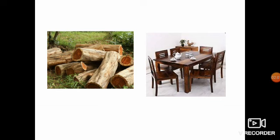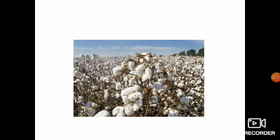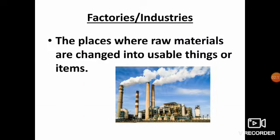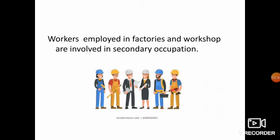Wood is changed into furniture in factories. Fiber is converted into cloth in cloth mills. What do you mean by factories or industries? Factories or industries are the places where raw materials are changed into usable things or items. Workers employed in factories and workshops are involved in secondary occupation.